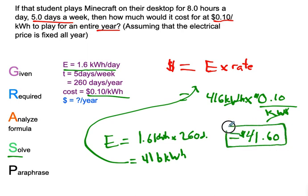It will cost an additional $41.60 on your desktop to play that much Minecraft. Your full-time Minecraft job will take $41.60 out of your pocket. It might seem less than expected — if you do the calculations wrong it could look like hundreds — but at 10 cents per kilowatt hour that's all it is. This is how you calculate electrical energy cost. If you're looking to play Minecraft for a living, expect to pay around 40 to 50 bucks a year depending on your rate. I really hope this helped — now go and calculate cost.